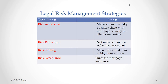In step three of the legal risk management process, a business needs to determine their legal risk management strategy. There are four different types of legal risk management strategy. The first type is called risk avoidance, where the business makes a conscious decision to avoid a particular legal risk altogether.